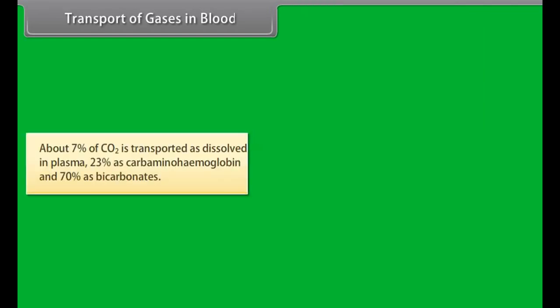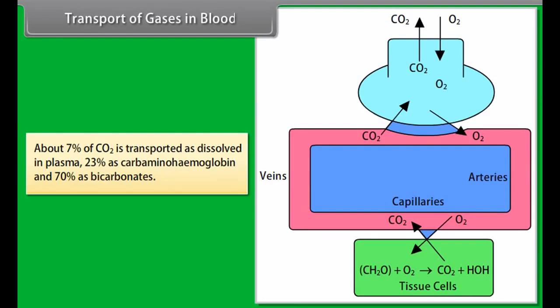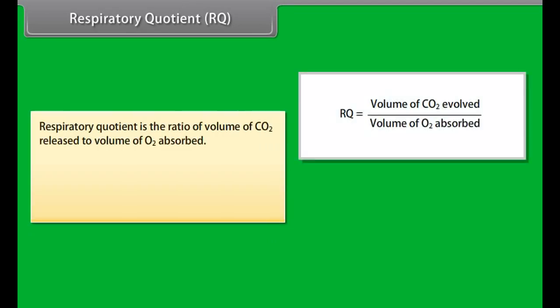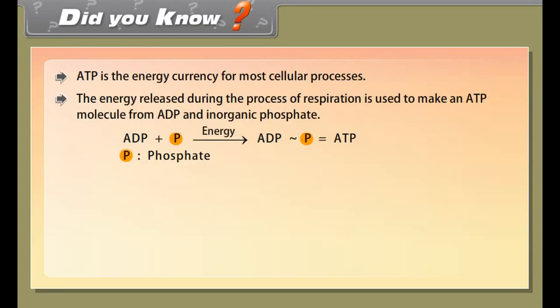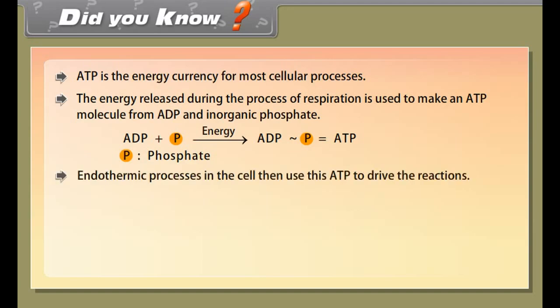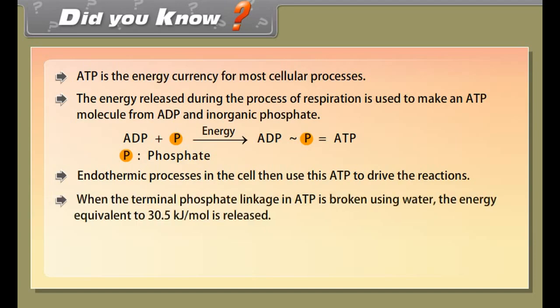There are four respiratory volumes: tidal volume (TV), inspiratory reserve volume (IRV), expiratory reserve volume (ERV), and residual volume (RV). There are also four respiratory capacities: inspiratory capacity (IC), functional residual capacity (FRC), vital capacity (VC), and total lung capacity (TLC). The recording of breathing is known as a spirogram. The apparatus used to measure pulmonary volume is a spirometer or respirometer.